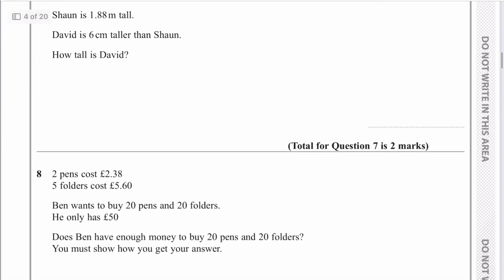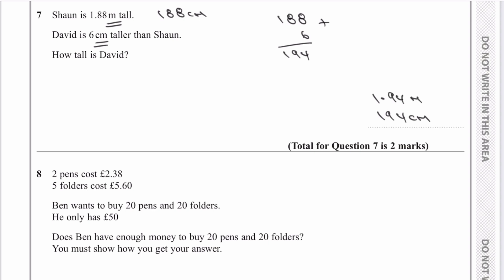Question seven: Sean is 1.88 metres tall, which is the same as saying he is 188 centimetres. When working through these problems, I tend to convert units because they often alter between metres and centimetres, so I'm going to change everything to centimetres. David is six centimetres taller than Sean, so it's going to be 188 plus 6 centimetres, which is 194. So David is 194 centimetres, or 1.94 metres if you prefer.